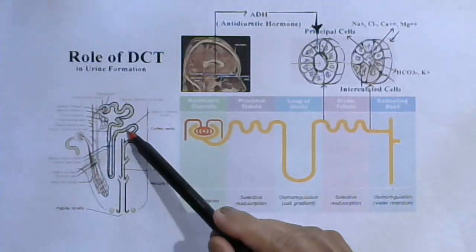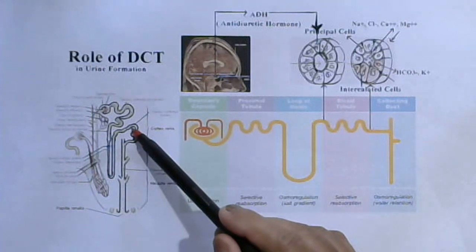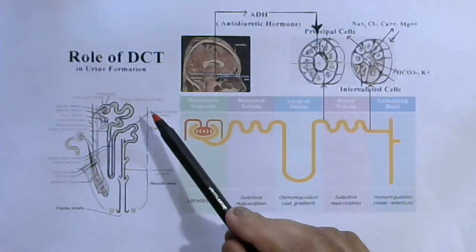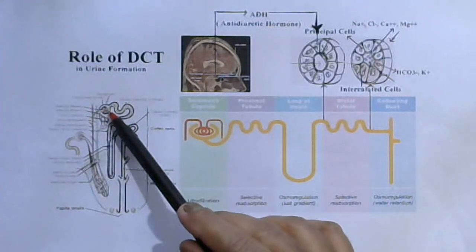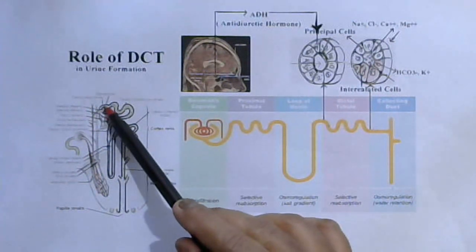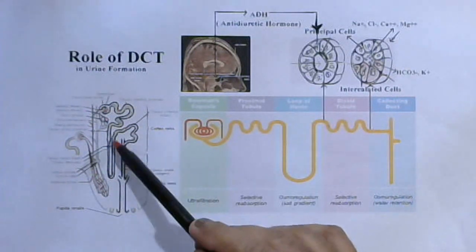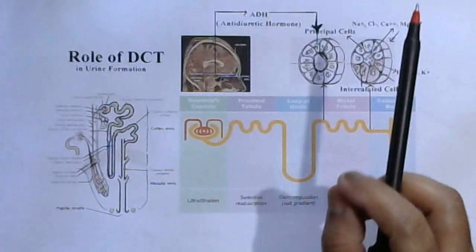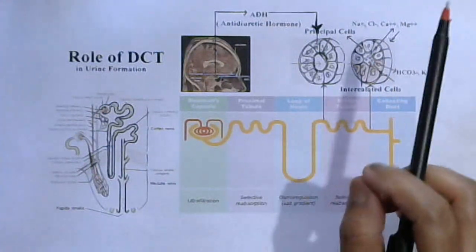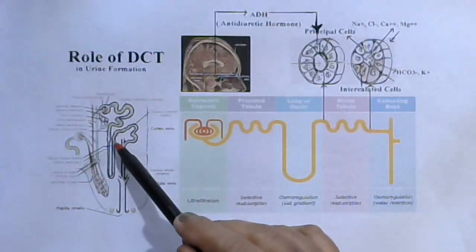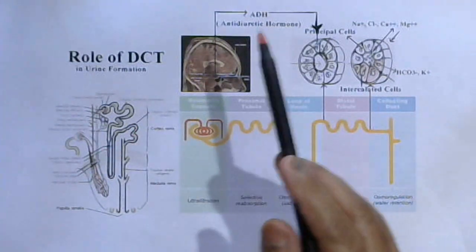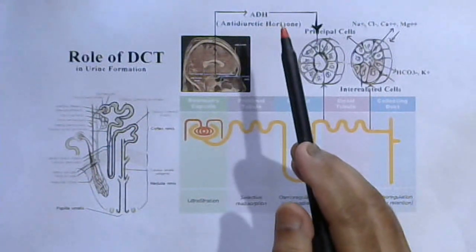After the ascending limb, the last portion of the nephron is called the distal convoluted tubule. Today's class is about which part of the nephron - whether the renal capsule, proximal tubule, or Loop of Henle - has specific functions in urine formation. The focus is on the distal convoluted tubule, the last segment of the nephron.